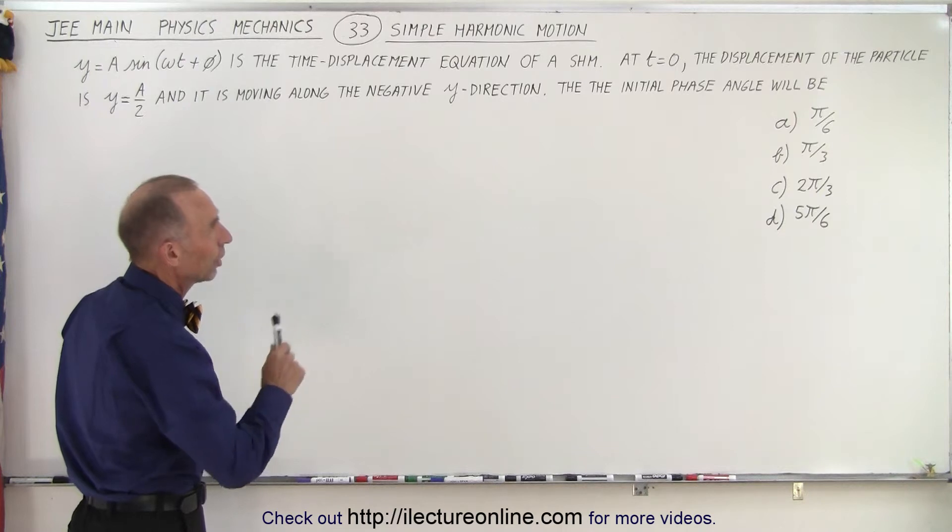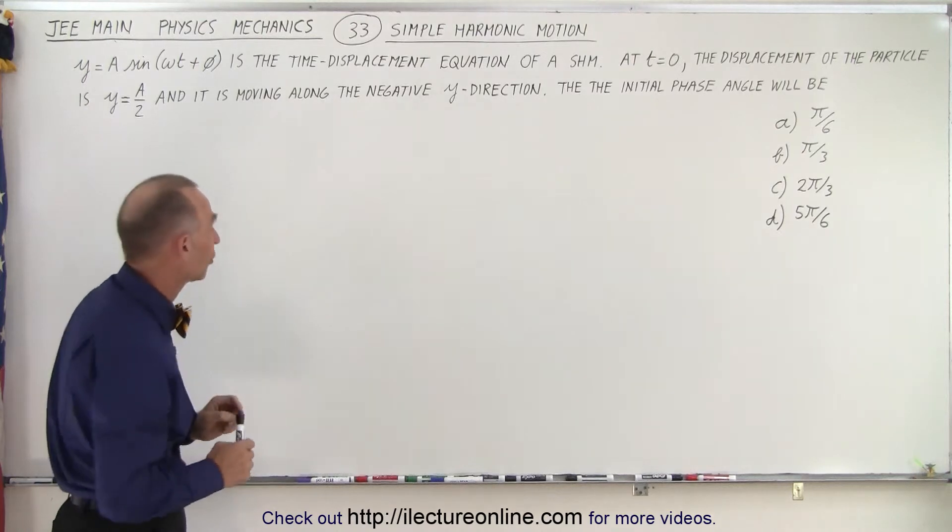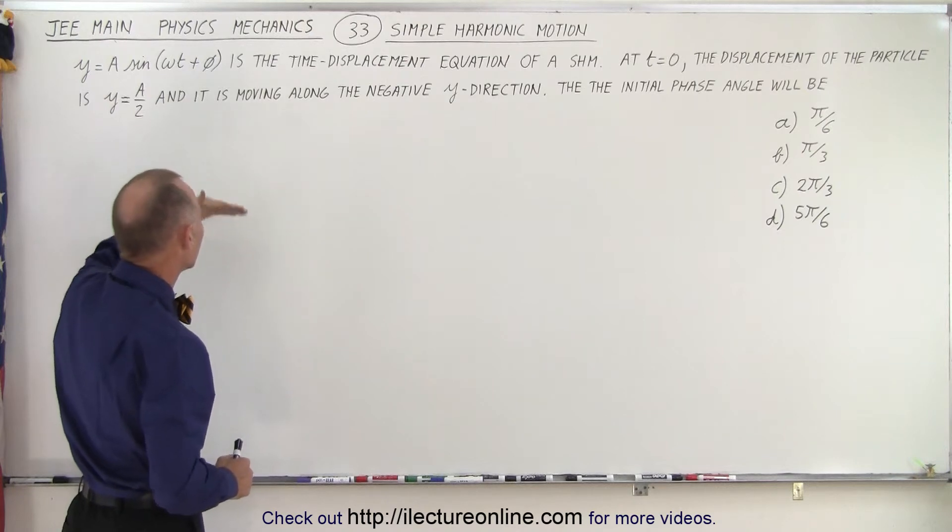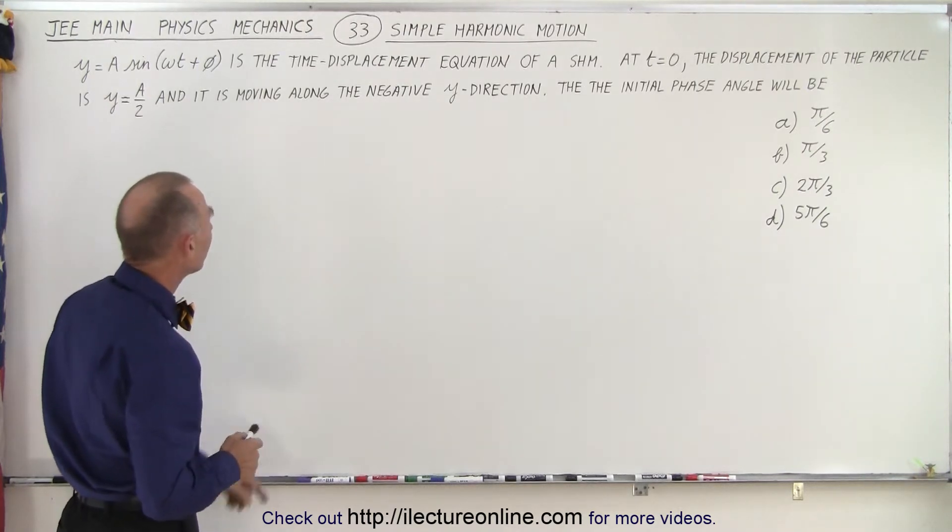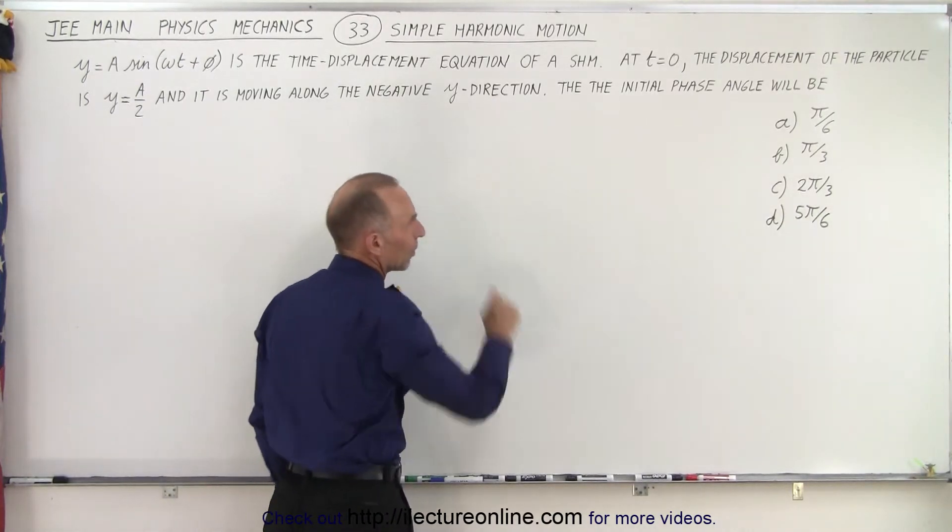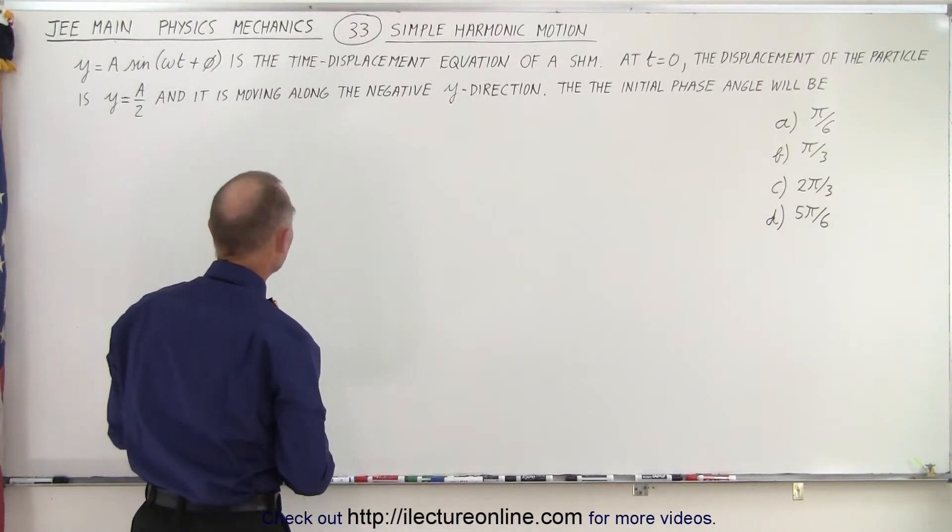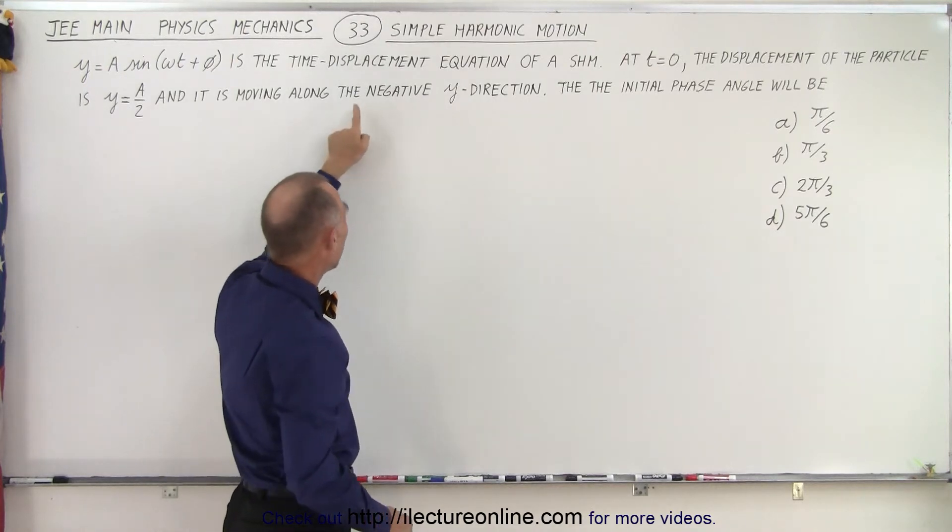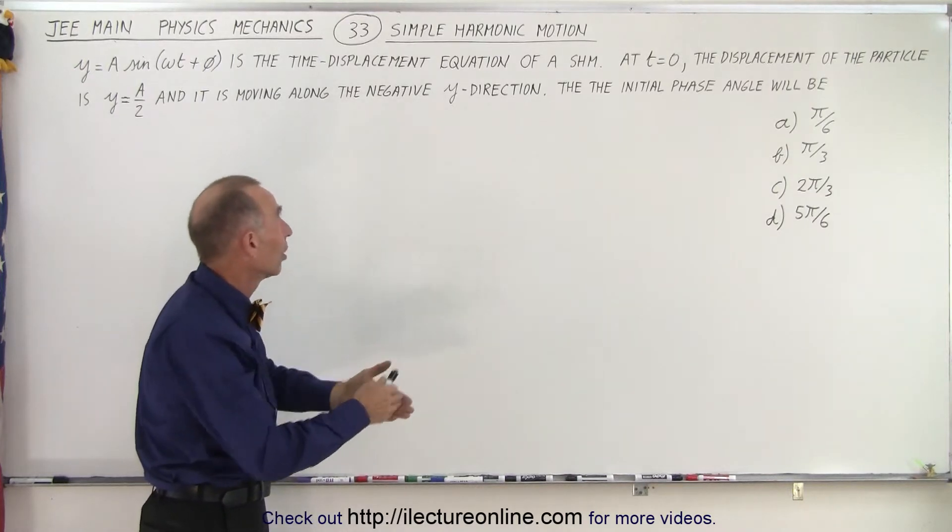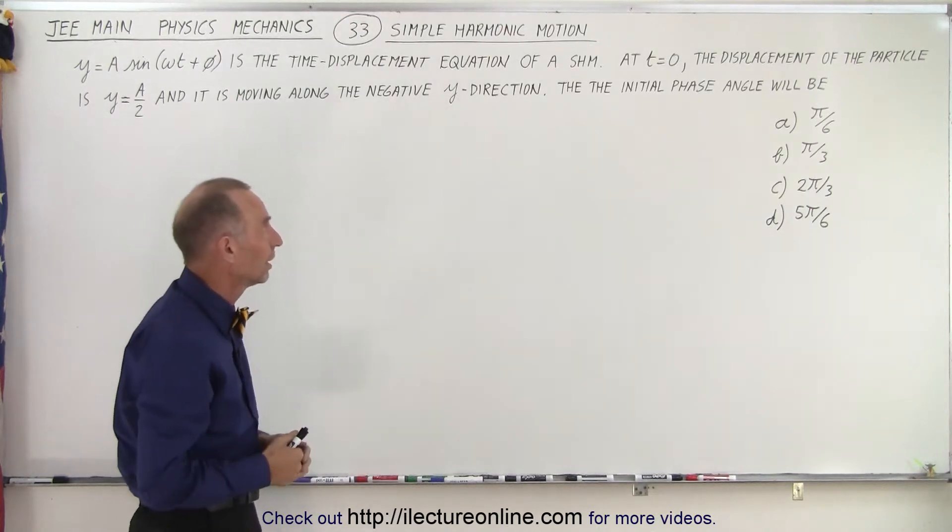At t equals zero, the displacement of the particle is y equals a over two, that's half the maximum amplitude, and it's a positive value so it's above the equilibrium point. Here I have trouble with it because it says it is moving along the negative x direction. I think they meant to say y direction because the equation has the displacement in the y direction, so I changed it to y. When they say along the negative y direction, I think they should have said in the direction of the negative y direction. That should be better, so it's moving downward, that's how I interpret it.